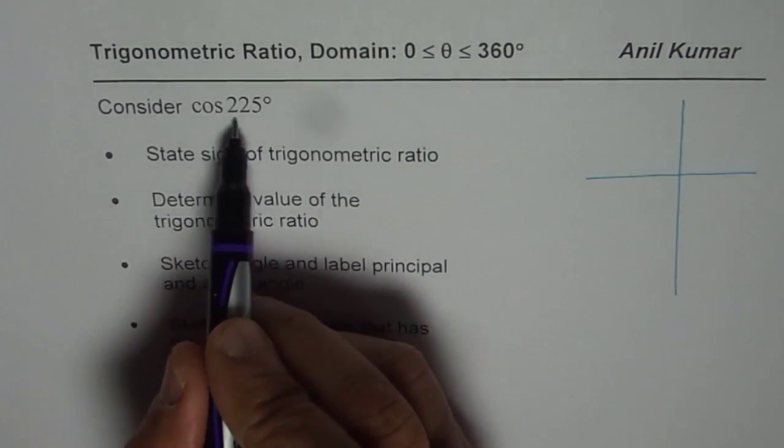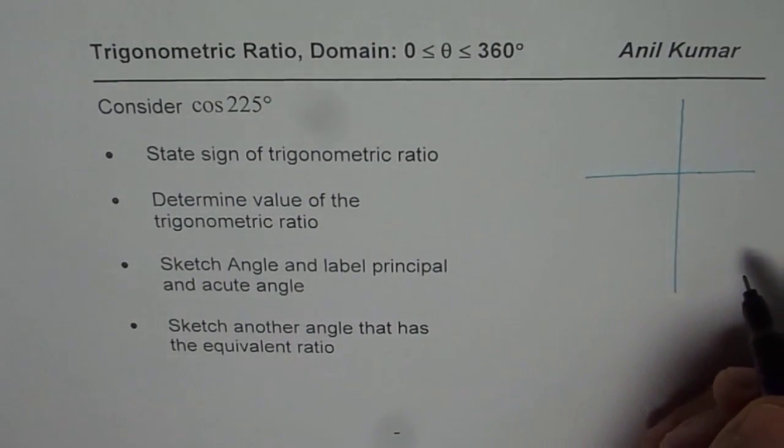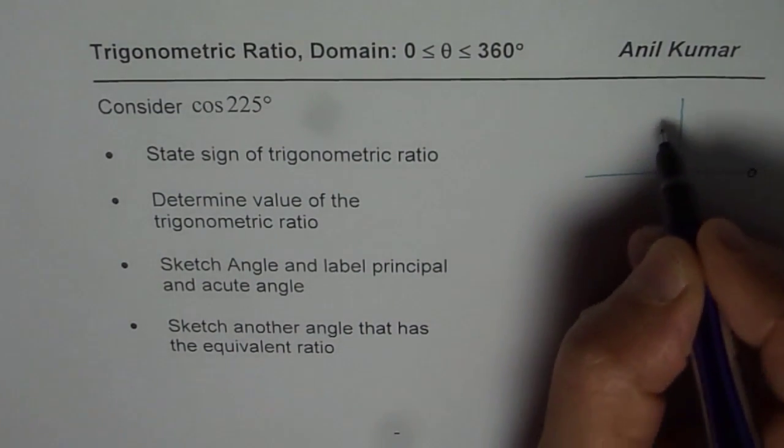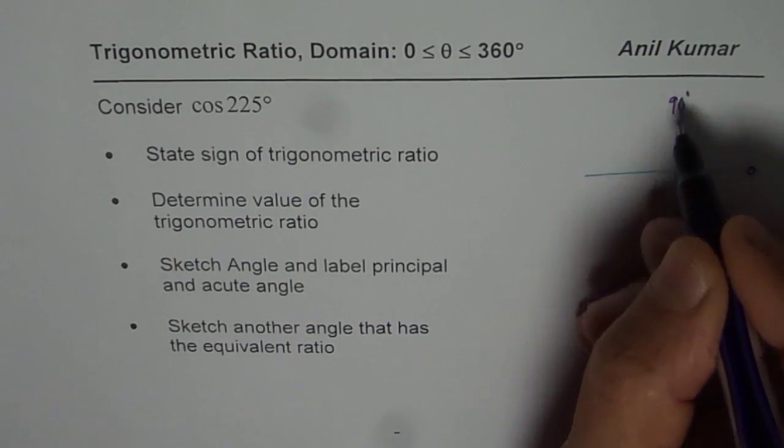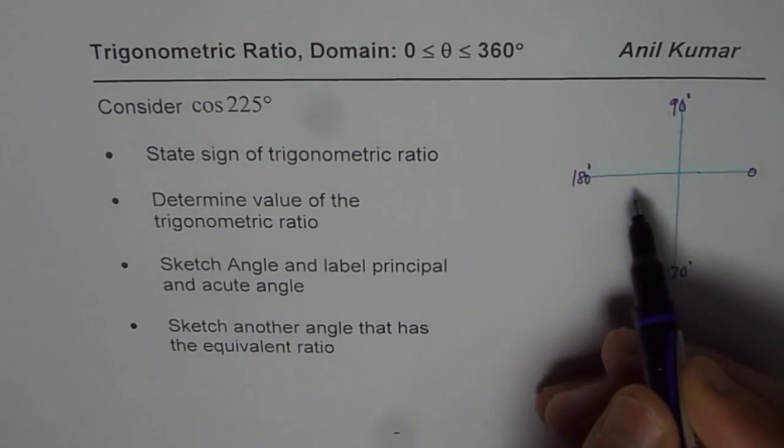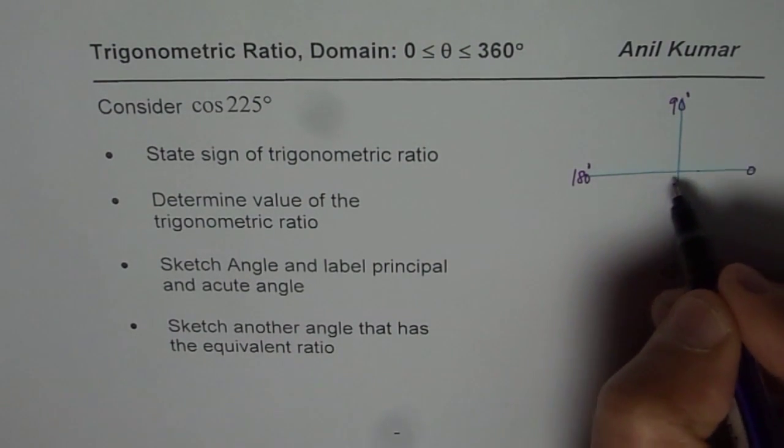225 degrees, this is always the principal angle given to us. So, measured from the positive x-axis, 225, we know this is 0. This is 90, 180 degrees, 270 degrees. So, 225 is more than 180 and less than 270, somewhere in between.